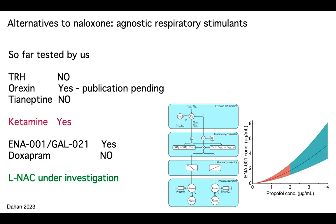We spoke about naloxone. Naloxone has many limitations: I spoke on the short duration of action, I spoke on the fact that it's very difficult for naloxone to reverse high-affinity opioids, and another big problem is it's unable to reverse non-opioid-induced respiratory depression. Many individuals who overdose on an opioid currently have other drugs on board — like xylazine or benzodiazepines — and these drugs are also very potent respiratory depressants.